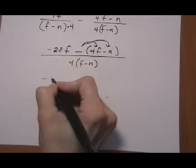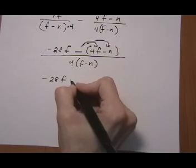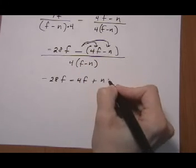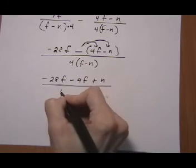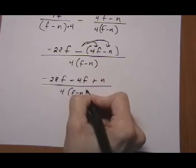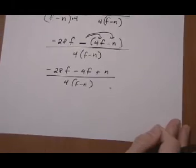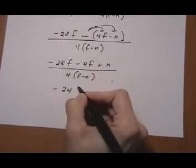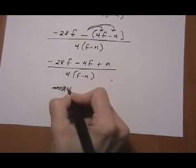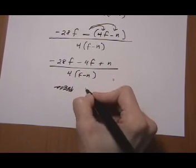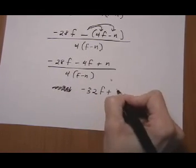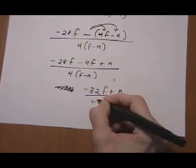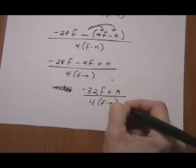To simplify we clear parentheses: minus 28F take away 4F, minus minus is plus N, all over the denominator. And combine like terms: minus 32F plus N all over the common denominator.